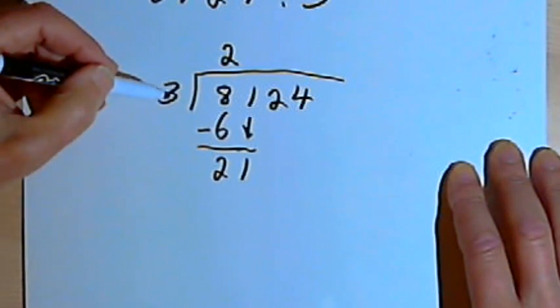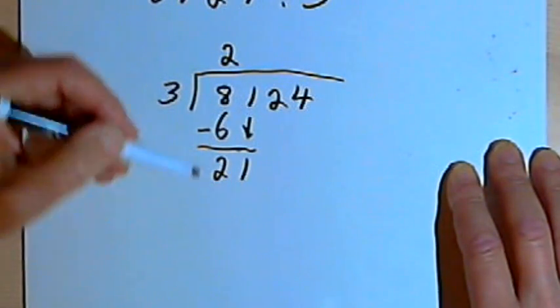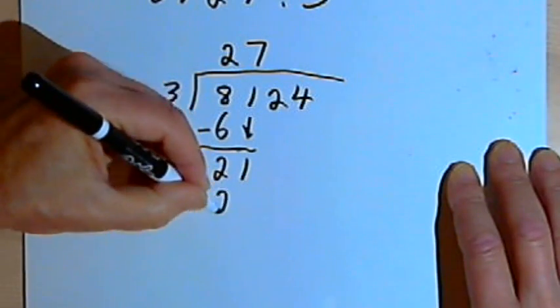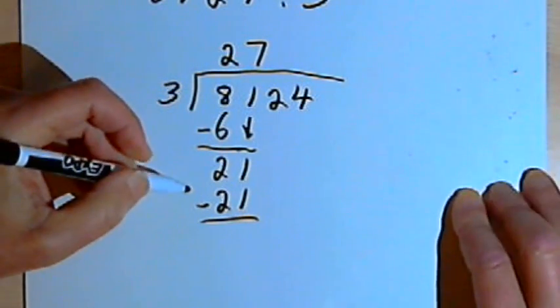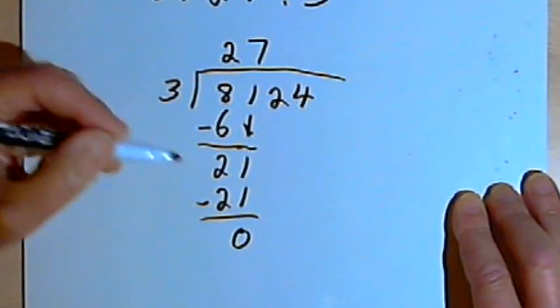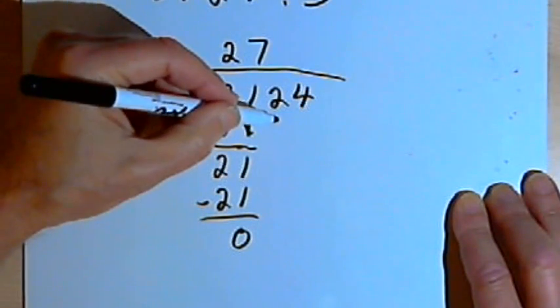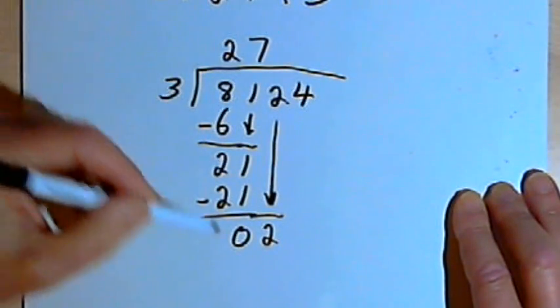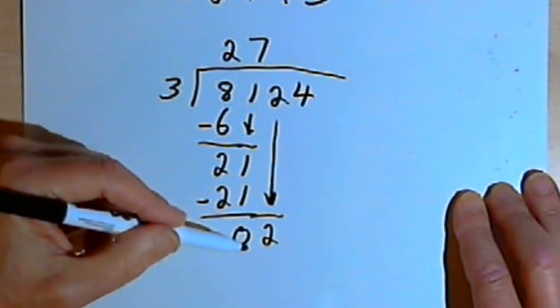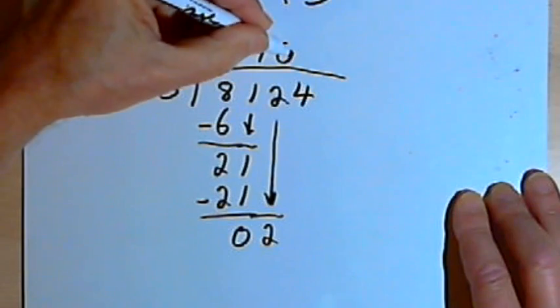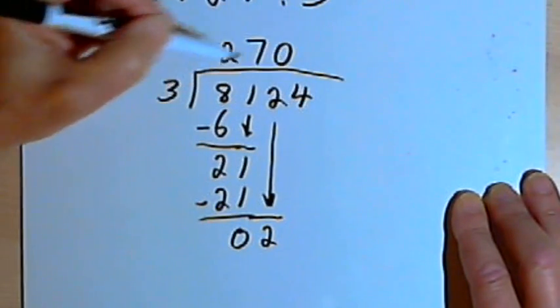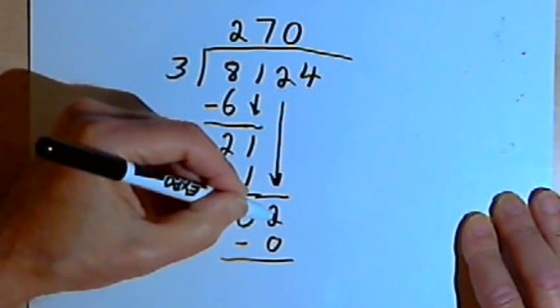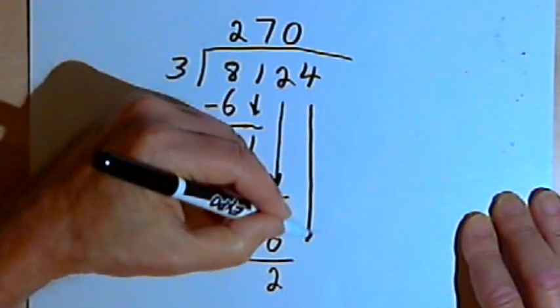Now I start the process again. 3 divided into 21 goes 7 times. 7 times 3, I'm doing the multiplication part, is 21. Now I'm up to subtraction. 21 minus 21 is 0. And I bring down the next number, which is a 2. Now I start again. So 3 goes into 2. Well, 3 doesn't go into 2. So 3 goes into 2 0 times. So I'll write a 0 above that 2. Then I multiply. 0 times 3 is 0. I have to subtract. 2 minus 0 is 2.